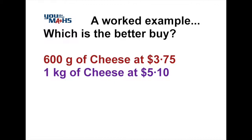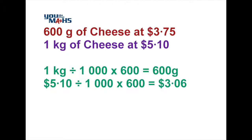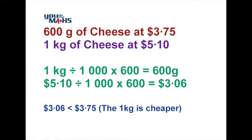There are several ways to consider this solution. First, we'll convert the one kilogram of cheese to grams — one kilogram is one thousand grams. Dividing by one thousand gives us the cost per one gram, and multiplying by six hundred gives us the cost for six hundred grams. This method compares the cheeses as if they were exactly the same mass. For the money: five dollars ten divided by one thousand is the price per gram, and multiplied by six hundred gives three dollars and six cents. That is cheaper than three dollars seventy-five, so the one kilogram packet is the cheaper option.